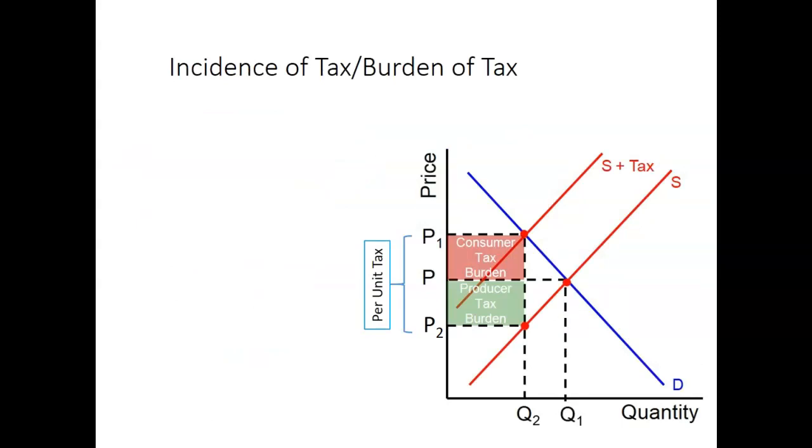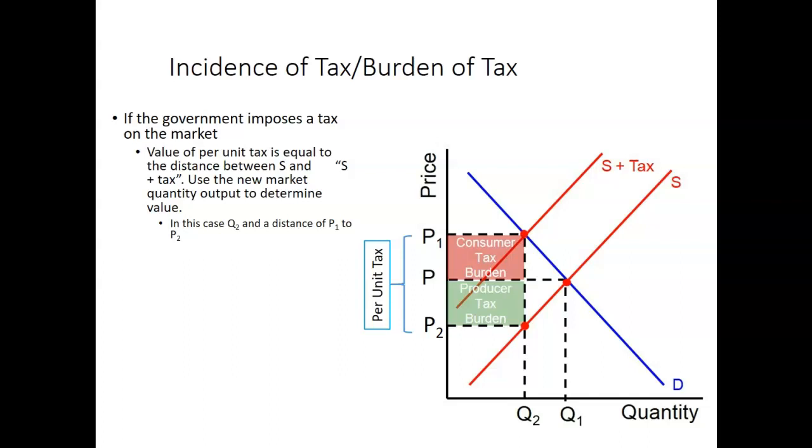Last topic, burden of tax. So one of the determinants of supply is government intervention, and there's kind of a subcategory of taxes and subsidies. So if there's a tax on producers, the burden of tax asks, who actually pays it? Where's the money come from? So I have S and then S plus tax. And so all those units would be an increase in the tax. And yes, you just do a proportional to that. Again, not drawn to scale is going to be a very important term because we're just freehanding this. So you just draw the two curves parallel, even though probably not very accurate. So the government imposes the tax on the market. The value of the per unit tax is equal to the distance between S and the S plus tax. So we're going to use the new market quantity output to determine the value. In this case, Q2 is going to be the new quantity. And then the tax is going to be P1 to P2. You can see I put a per unit tax on there.